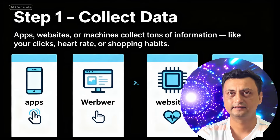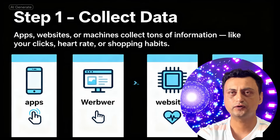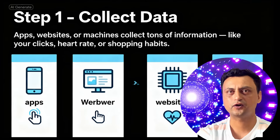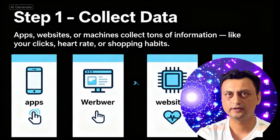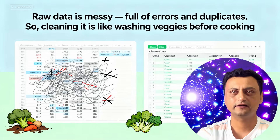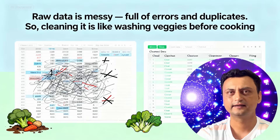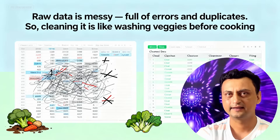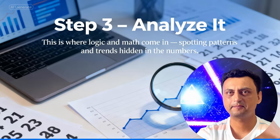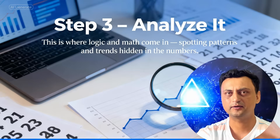To understand data science, think of it like a journey through five simple steps. Step 1: Collect data — apps, websites, or machines collect tons of information like your clicks, heart rate, or shopping habits. Step 2: Clean the data — raw data is messy, full of errors and duplicates, so cleaning it is like washing and preparing ingredients before cooking. Step 3: Analyze it — this is where logic and math come in, spotting patterns and trends hidden in the numbers.